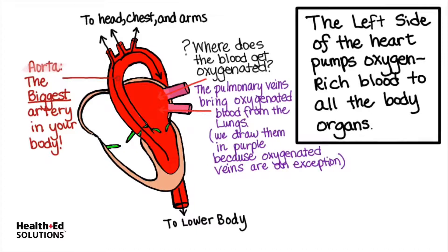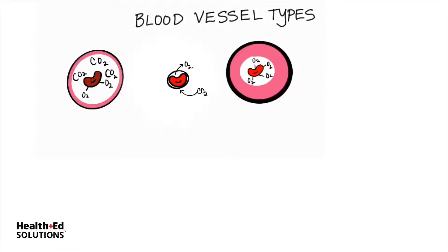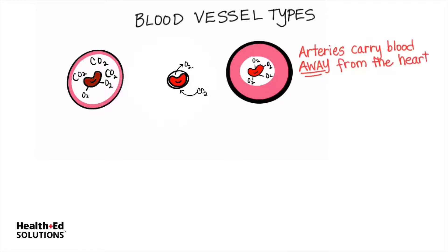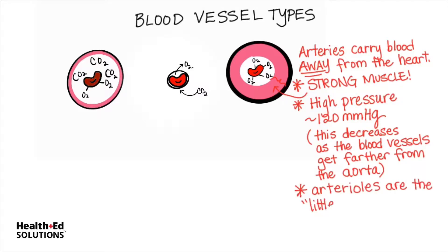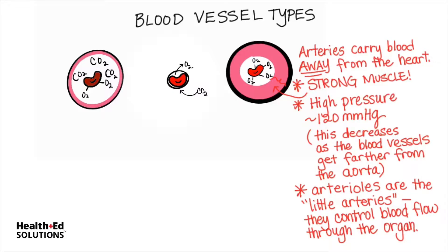But what happens to that blood once it's in the aorta? Let's take a look at the different kinds of systemic blood vessels. There are generally three kinds. Arteries carry blood away from the heart. They typically are very strong and muscular — look at the size of that wall. They're under high pressure, but this does decrease as the blood vessels get farther from the aorta. Arterioles are little arteries, and they tend to control the amount of blood flow that can go through a particular organ. That systolic value of 120 millimeters of mercury is the high pressure that comes out through the aorta, and it drops from that point on until it comes back around to the heart.